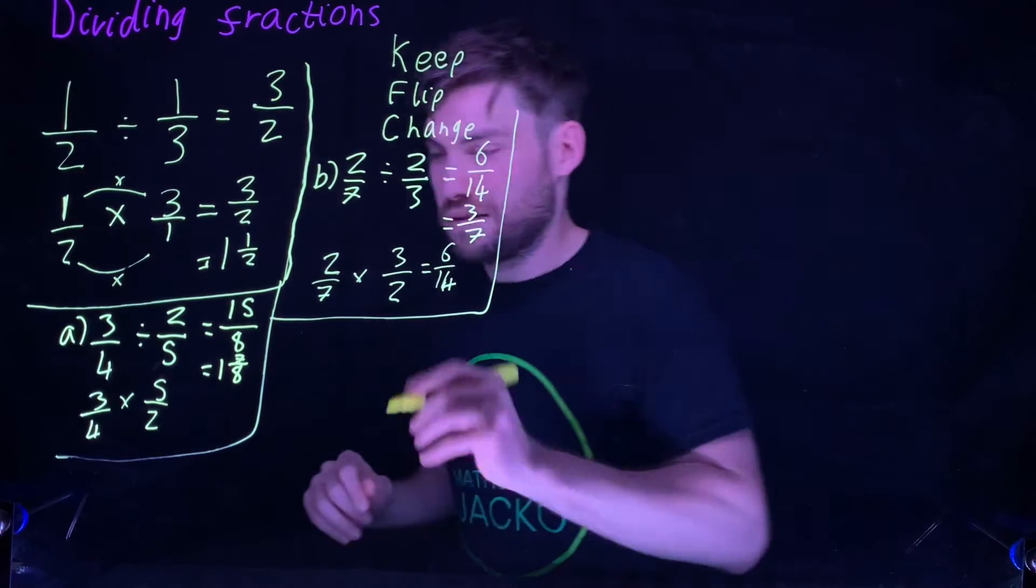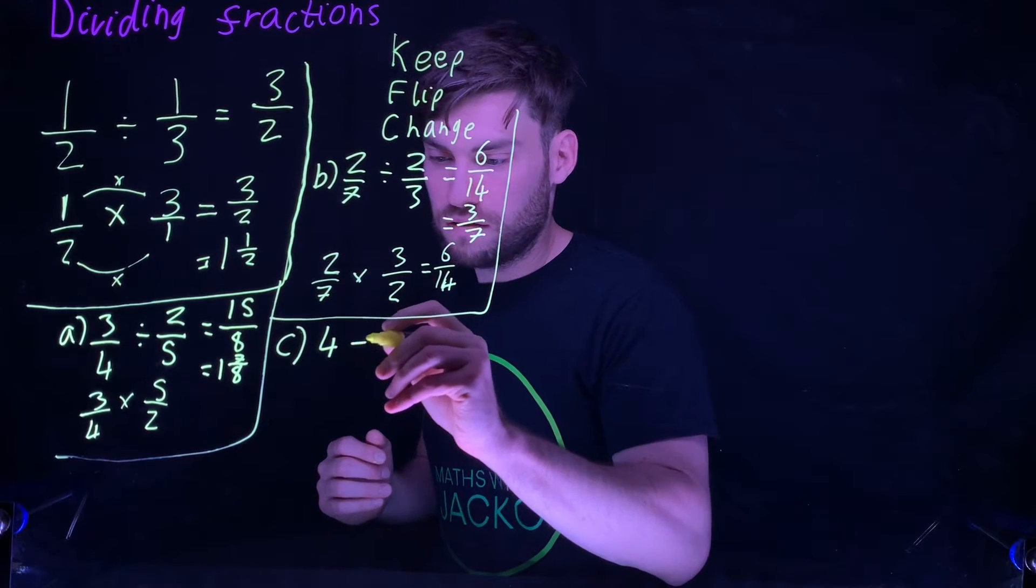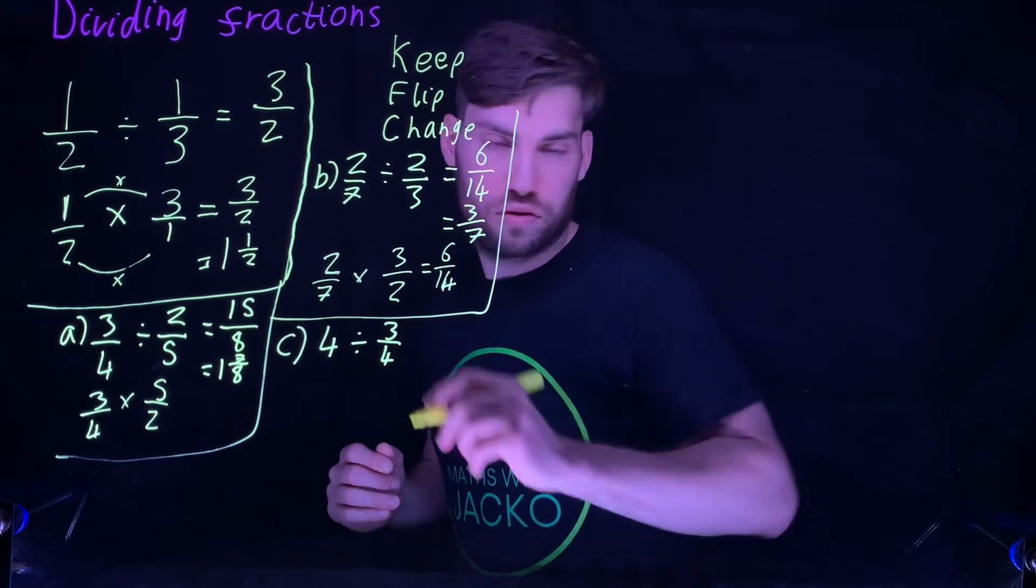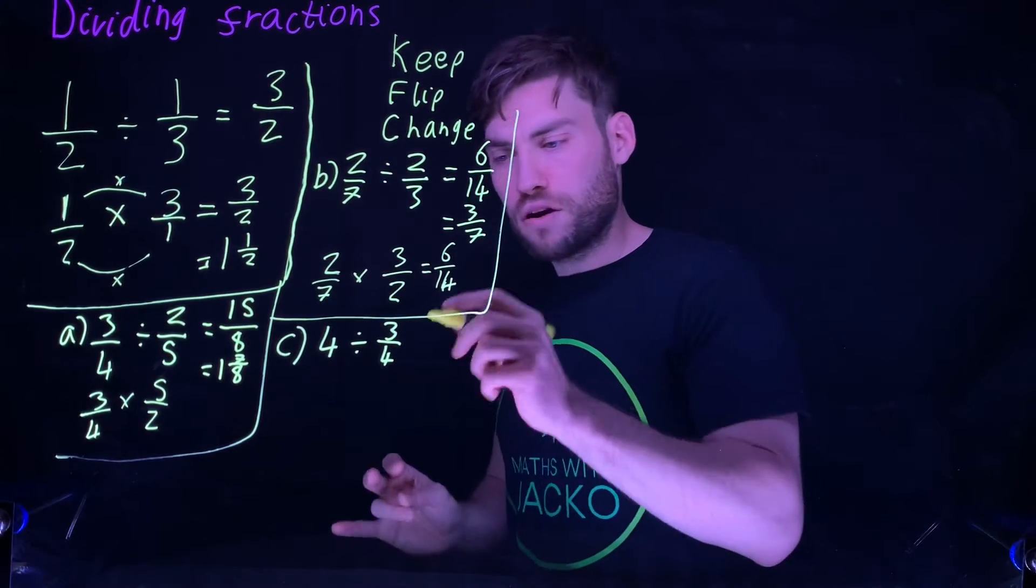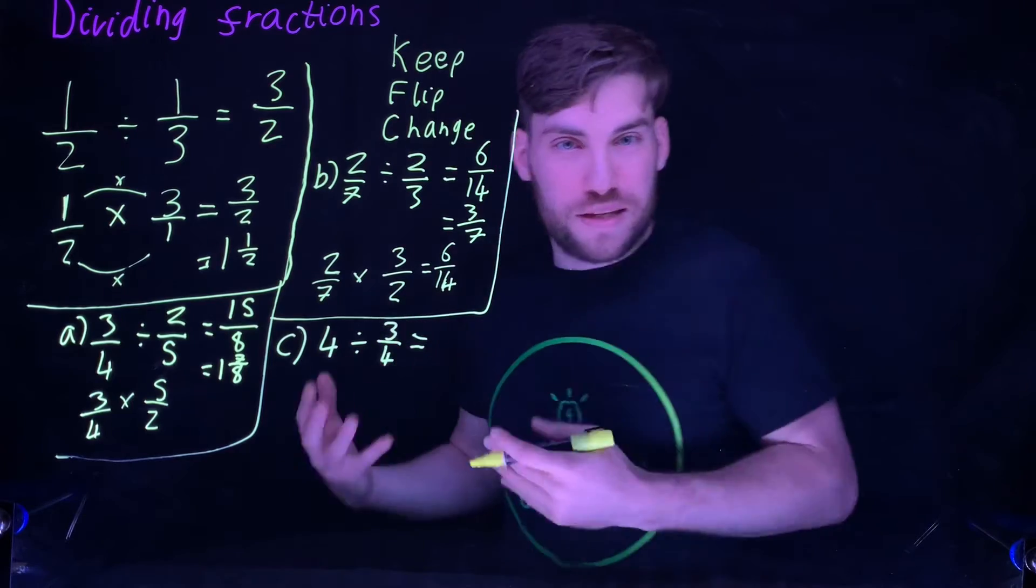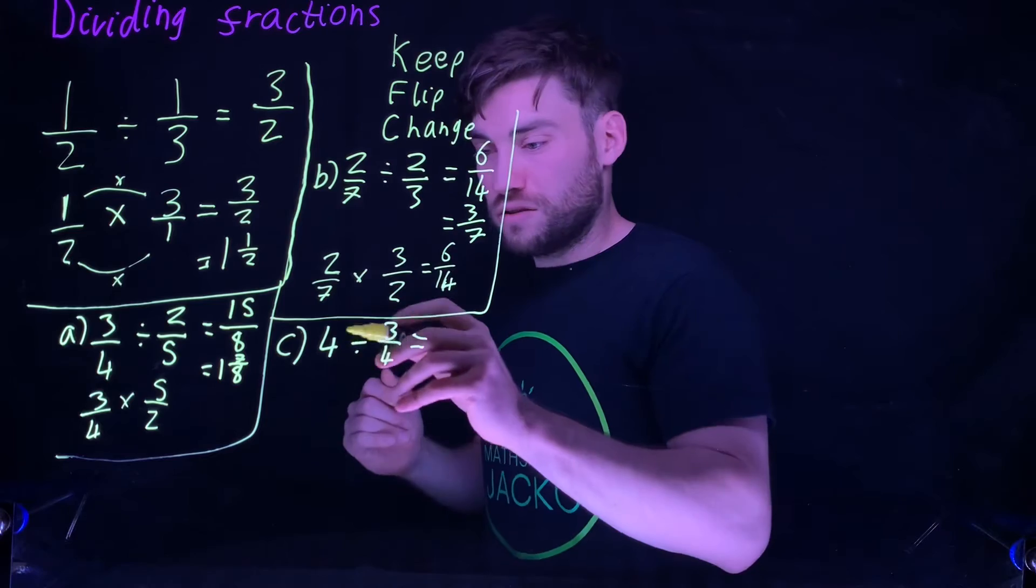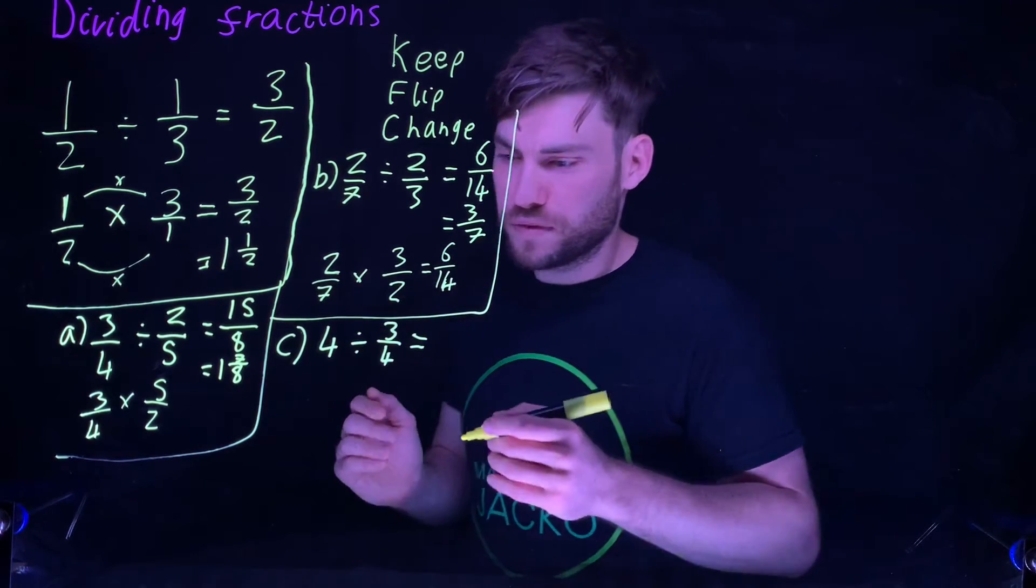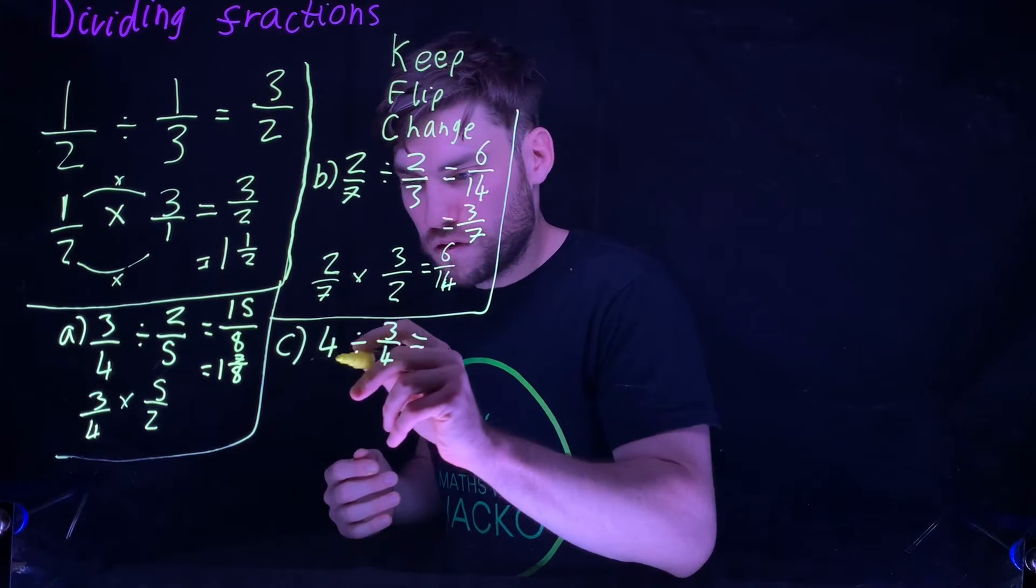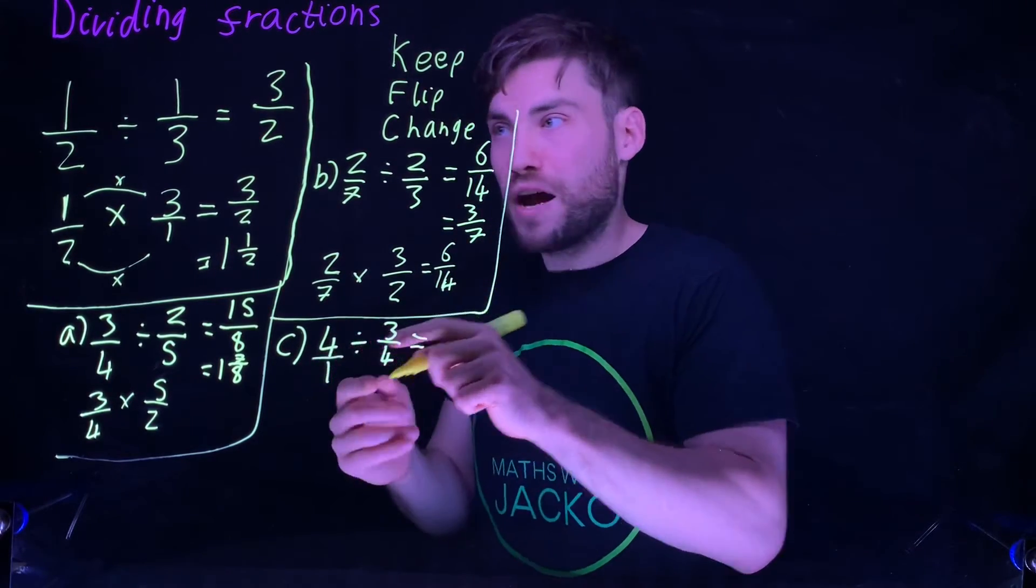How does the question get a bit harder? Let's say we have four divided by three quarters. Pause the video, have a go at that one. It's just one fraction and an integer, which is a whole number. We have to convert that to a fraction. If you watch my multiplying fractions video, you'll see what I do. Instead of four, you can change that to four over one.